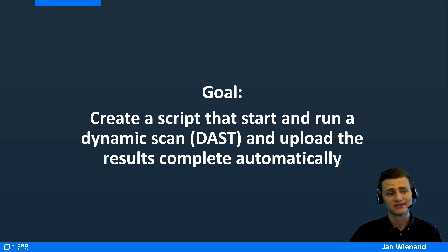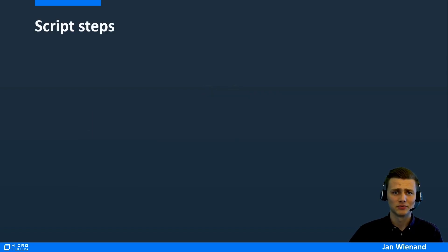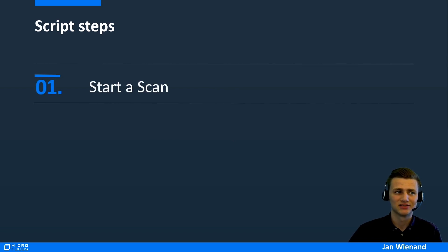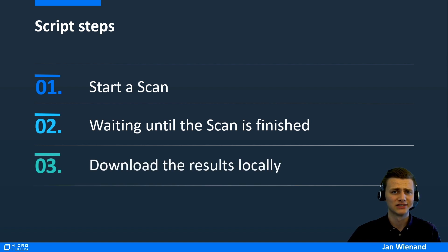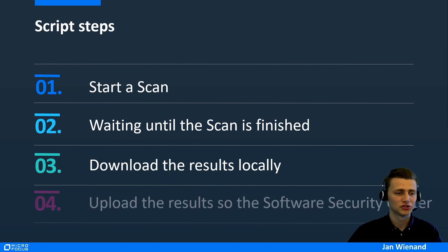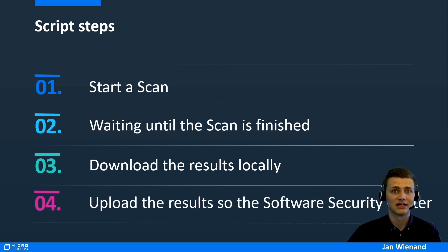To do that, we need to define the steps in our script. The first step is to start the dynamic scan using Fortify WebInspect. After that, we wait until the scan is finished and download the results locally. The last step is to upload the results to our Software Security Center.